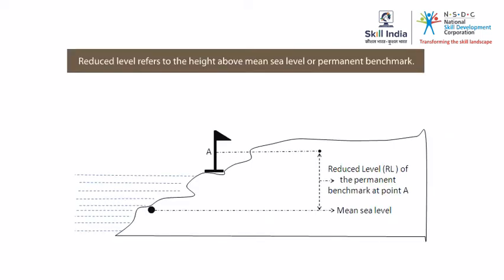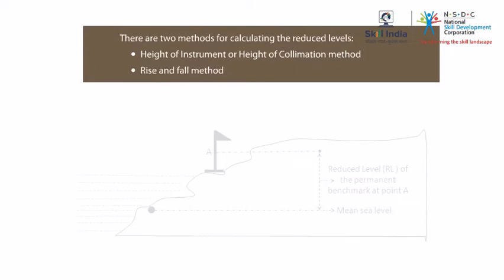Reduced level means the vertical distance between a given point and the surface of the benchmark, or other reference level such as the mean sea level. There are two methods for calculating the reduced levels: the height of instrument or height of collimation method, and the rise and fall method.